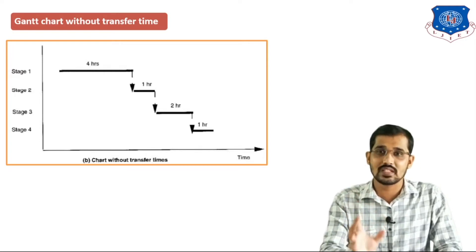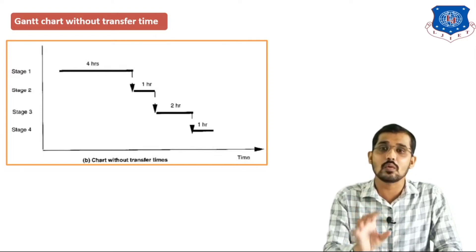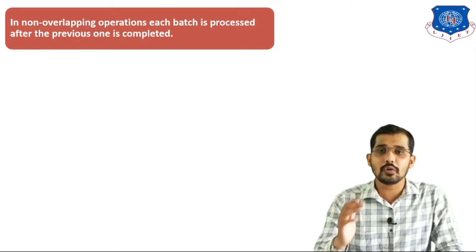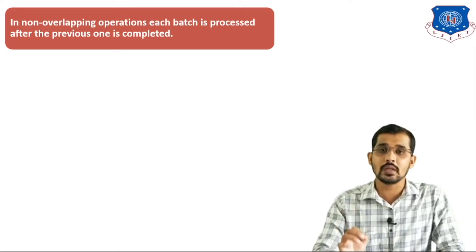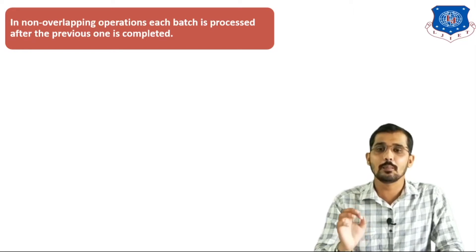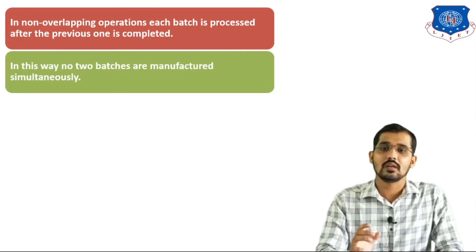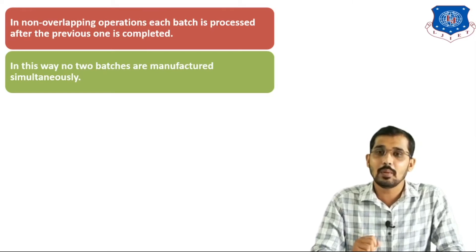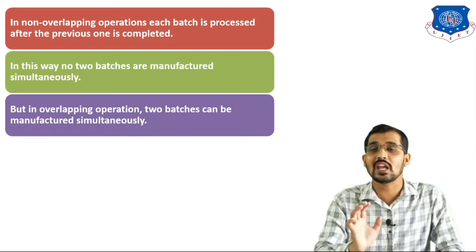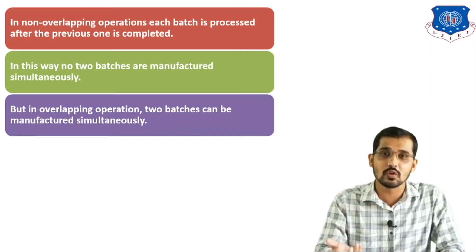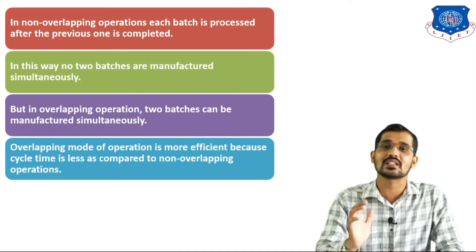Now we will see the important concept for your exam: overlapping operation and non-overlapping operation. In non-overlapping operations, each batch is processed after the previous one is completed. We can start processing the second batch only when the first batch is completed, so no two batches are manufactured simultaneously. But in overlapping operations, two batches can be manufactured simultaneously, making it less time-consuming. Overlapping mode of operation is more efficient because cycle time is less as compared to non-overlapping operation.